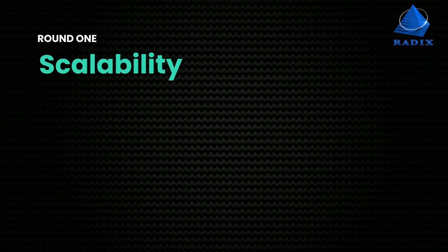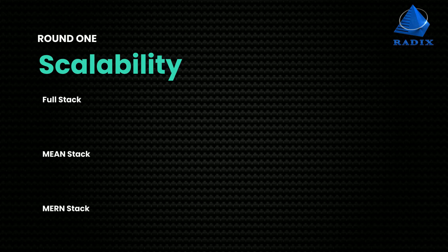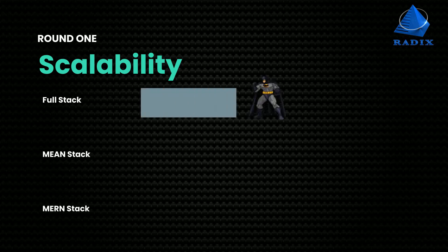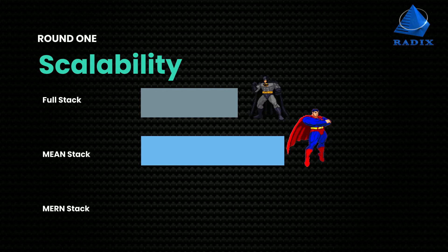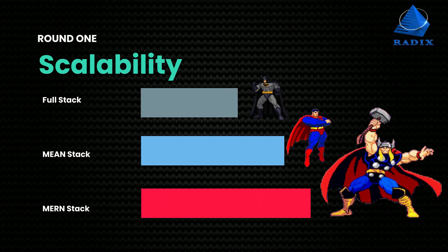1. Scalability. Fullstack supports medium scalability. Meanstack also supports medium scalability. With Mernstack, scalability levels are high.